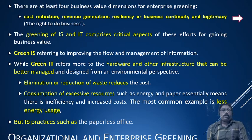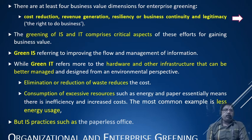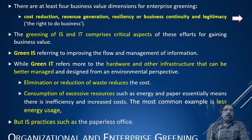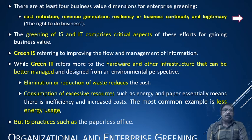Two key concepts to understand: green IS deals with improving the flow and management of information, and green IT is mainly about hardware and infrastructure that can be better managed. For green IT, the first approach is elimination or reduction of waste, which also reduces cost. The consumption of expensive resources such as energy and paper indicates inefficiency and increased cost. The most common focus is less energy consumption — if energy consumption is reduced, ultimately cost will also be reduced.